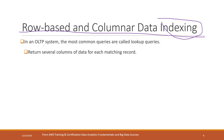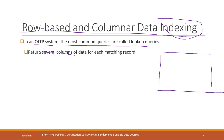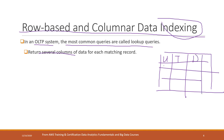For OLTP, the most common queries are lookups — we want to check some random queries and return several columns of data for a matching record. For example, in our table we have different users, their transactions, and dates. If we are interested in a specific user's transactions on a specific date, that is a row-based query, and it is suitable for row-based indexing.